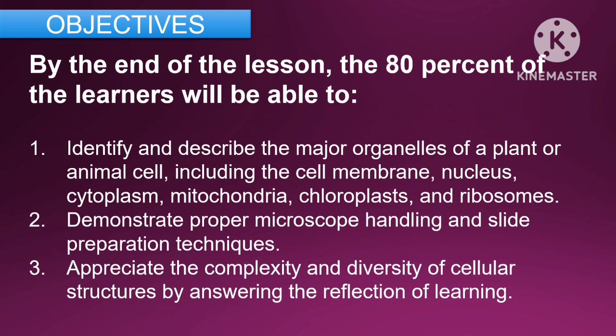For the objectives, by the end of the lesson, 80% of the learners will be able to: first, identify and describe the major organelles of the plant or animal cell, including the cell membrane, nucleus, cytoplasm, mitochondria, chloroplasts, and ribosomes; second, demonstrate the proper microscope handling and slide preparation techniques; and third, appreciate the complexity and diversity of cellular structure by answering the reflection of learning.